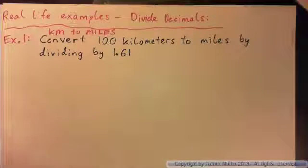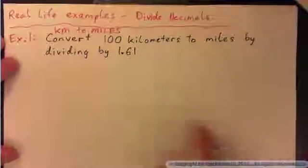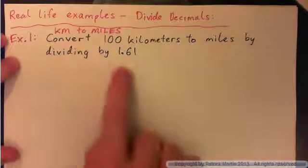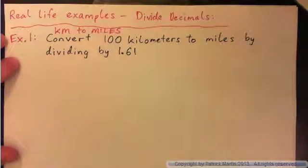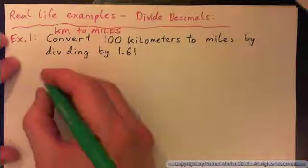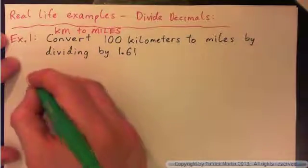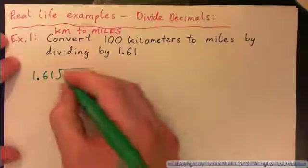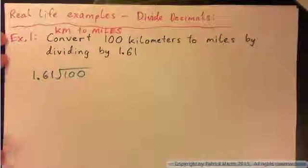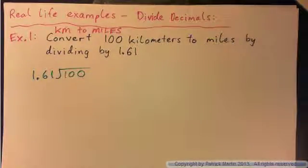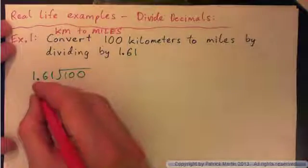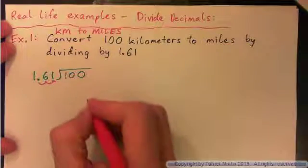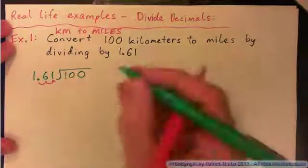Let's start with example 1: kilometers to miles. Convert 100 kilometers to miles by dividing by 1.61. So I've got to go 1.61 into 100. The problem is I've got a decimal in the divisor part, so I've got to move that over 1, 2 spaces.